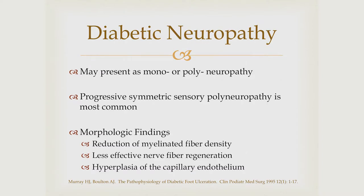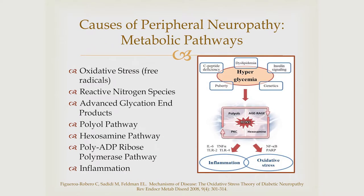Neuropathy may present either as a mono or poly neuropathy, but most commonly in diabetics it's symmetric poly neuropathy. You get sensory neuropathy, motor neuropathy, autonomic neuropathy. Morphological findings of the nerve can show a reduction in myelinated nerve fiber density, less effective regeneration, and capillary endothelium dysfunction and hyperplasia. The hyperglycemic state in diabetics leads to metabolic derangements in various pathways that cause increased oxidative stress and inflammation, which potentiate neuropathy.